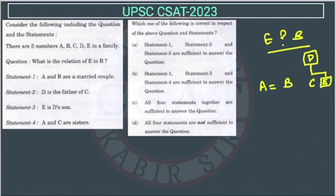And A and C are sisters. So we have to find the relationship between E and B — can we find it right now? No. So now the next statement: A and C are sisters.